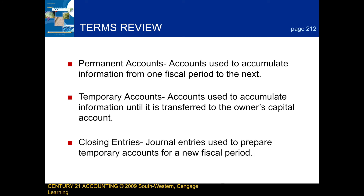There are just a few key terms I'd like to go over before we start the accounting part of this lesson. Permanent accounts are accounts used to accumulate information from one fiscal period to the next. Temporary accounts are accounts used to accumulate information until it is transferred to the owner's capital account. And closing entries are journal entries used to prepare temporary accounts for a new fiscal period.